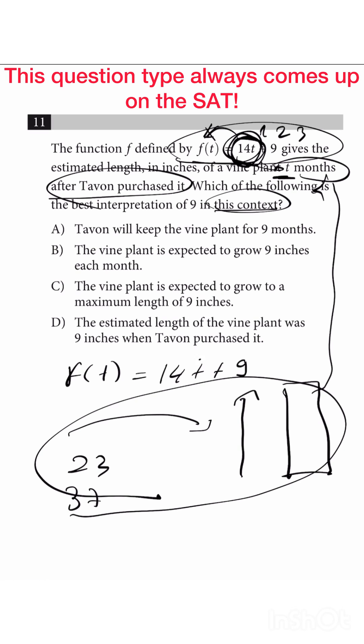It means that the 14 here is how much this plant grows in a month, okay? So in one month, it will grow 14 centimeters. And in two months, it will grow 27, 28.